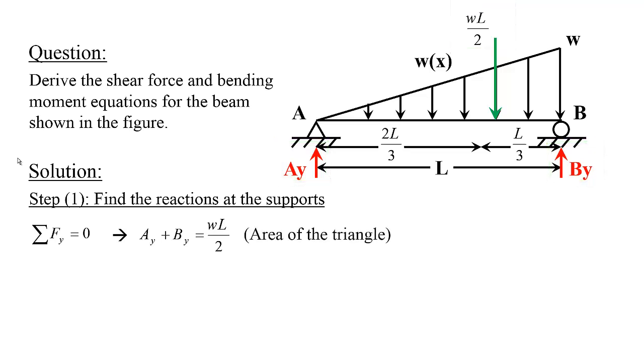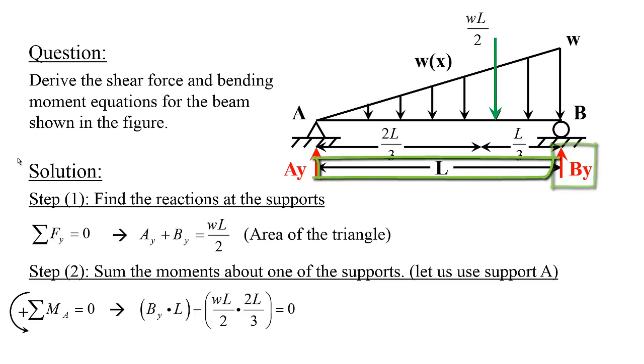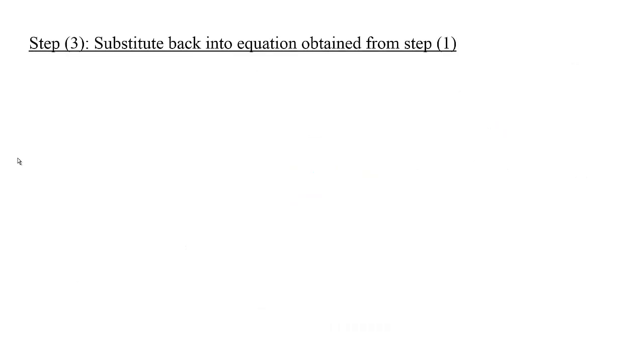Which leads us to AY plus BY equals WL over 2. That's the area of the triangle. Next, we sum the moments about one of these supports. I chose support A. Summation of the moments about A with counterclockwise direction positive, set equal to zero. We have BY multiplied by L minus WL over 2 multiplied by 2L over 3, set equal to zero. We get BY equals WL over 3. In the next step, we substitute back to solve for AY. We have AY plus WL over 3 equals WL over 2. Solving for AY, I get WL over 6.